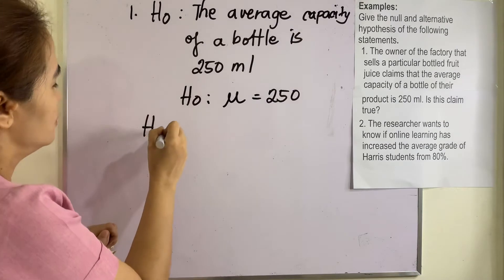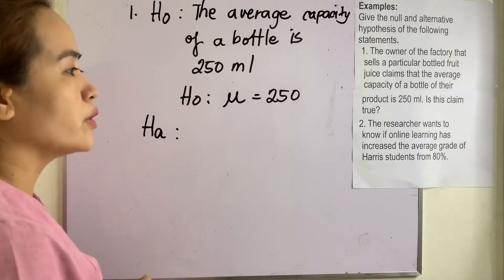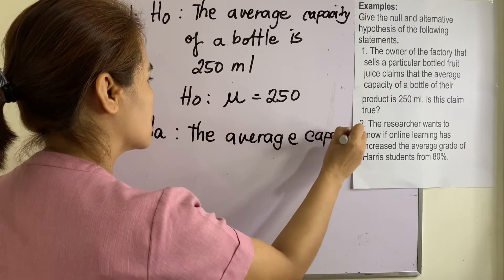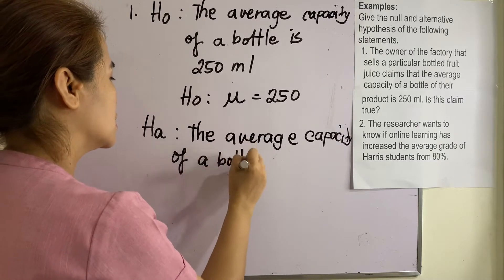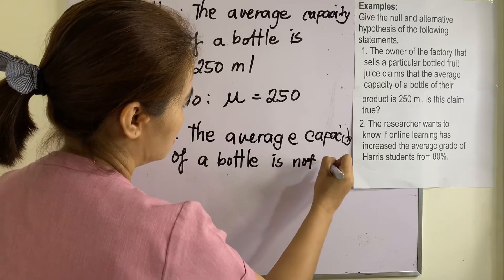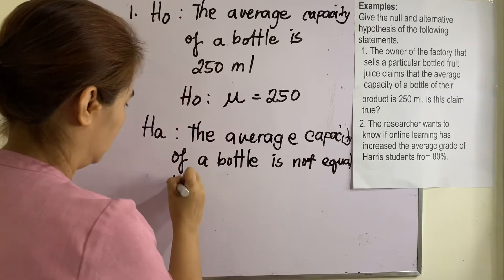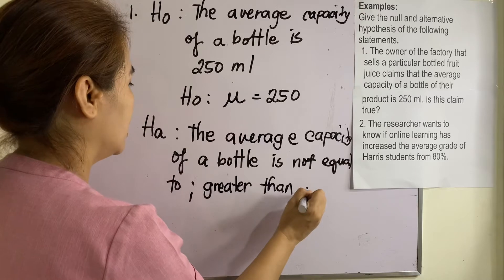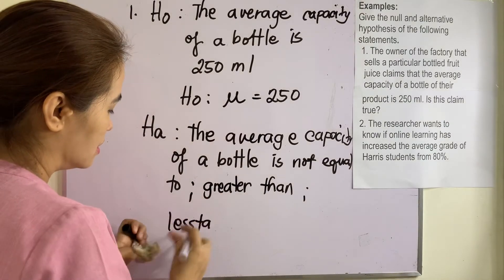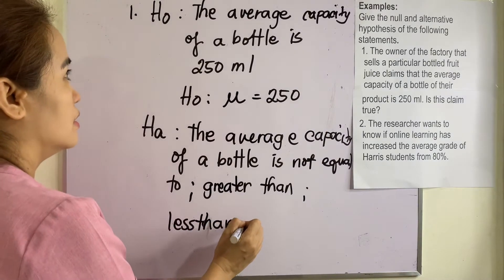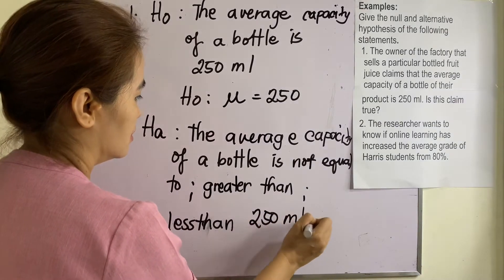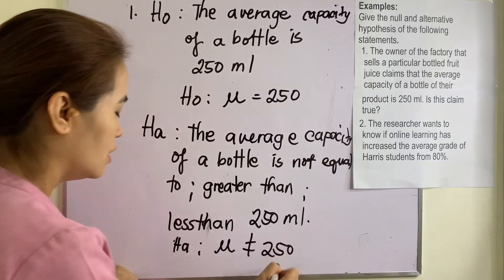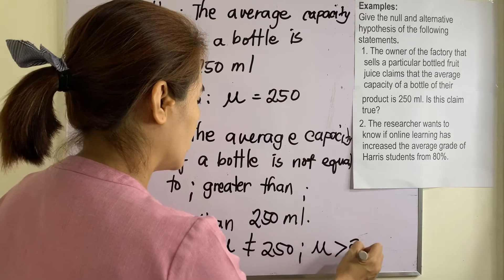So our alternative hypothesis would be: the average capacity of a bottle is not equal to 250 ml. In symbol, the alternative hypothesis is mu not equal to 250. It can also be greater than 250, or it can be less than 250 ml.